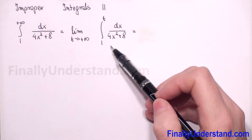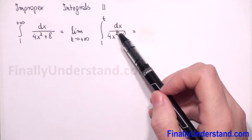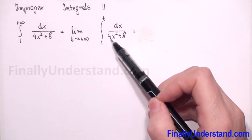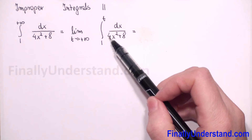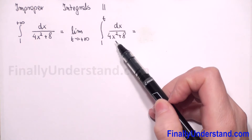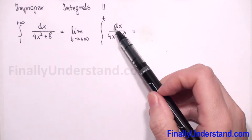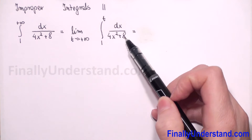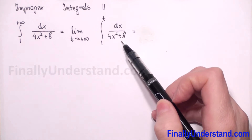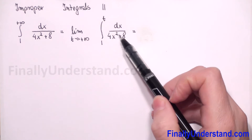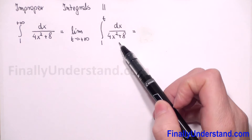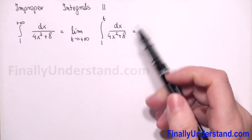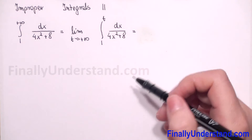Now we have to solve this definite integral, so first we have to check if our function is continuous. We have 1 over 4x squared plus 8 — this is a continuous function, and the numerator is always different from 0.